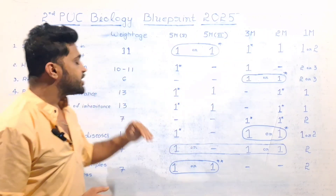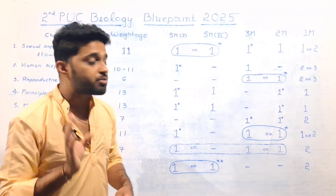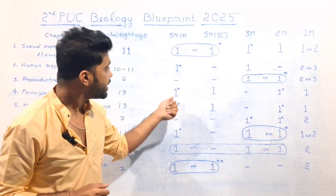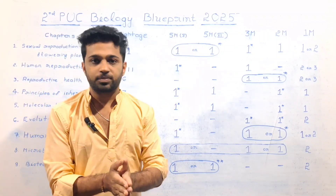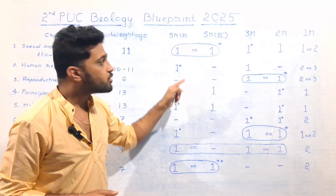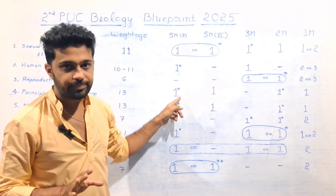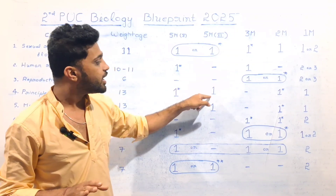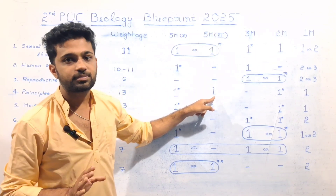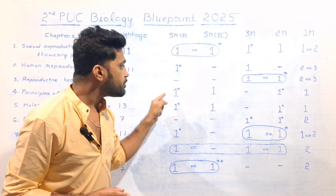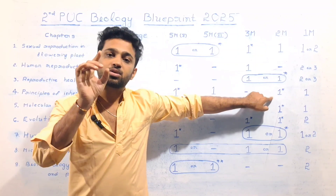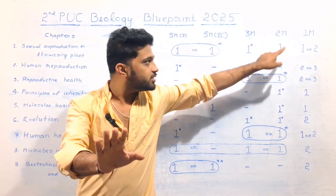The next topic is the Principles of Inheritance — this is the highest weightage chapter, worth 13 marks. In this chapter there are 5-mark questions. There are 8 questions; Question Main 6 has 5 marks. There are 5-mark questions related to this chapter — this is the Principles of Inheritance. There are also 2-mark questions at 100%, and 1-mark questions.